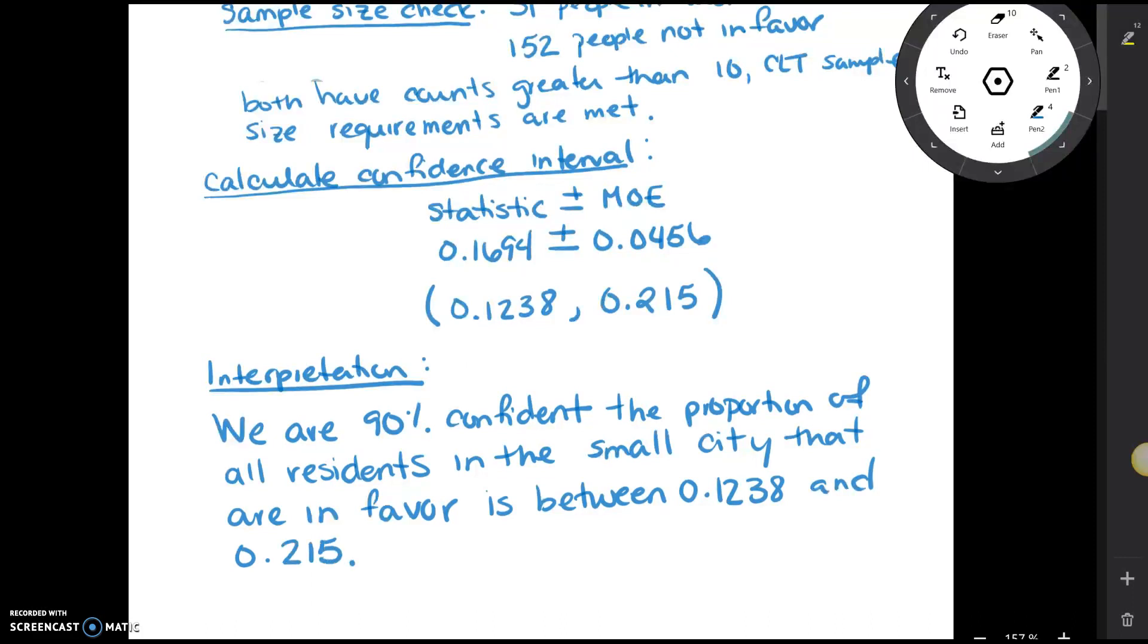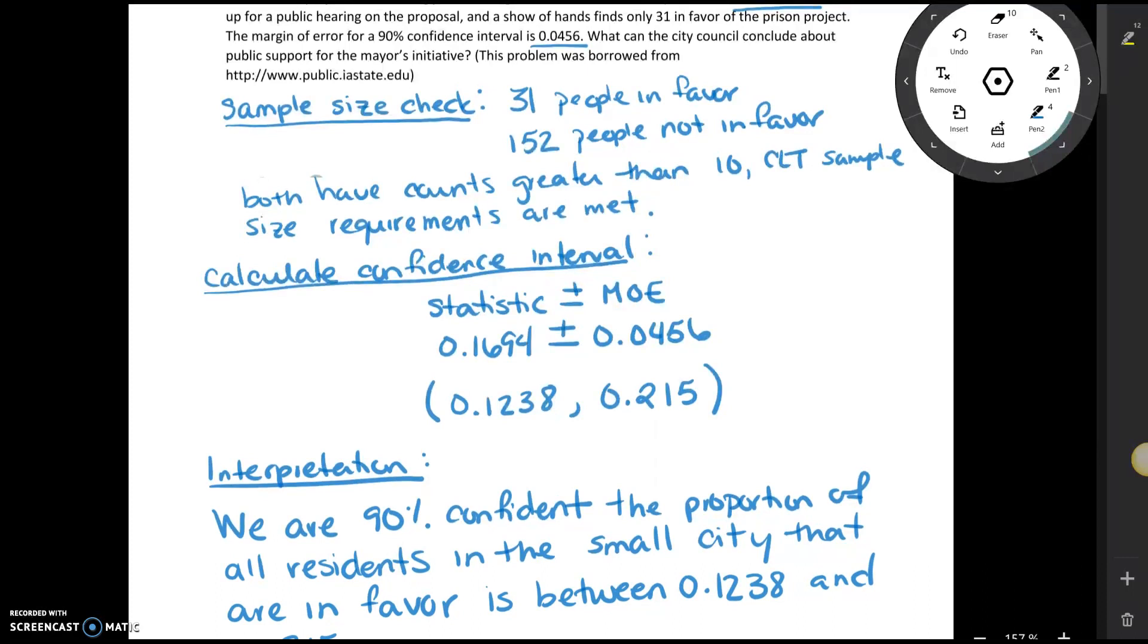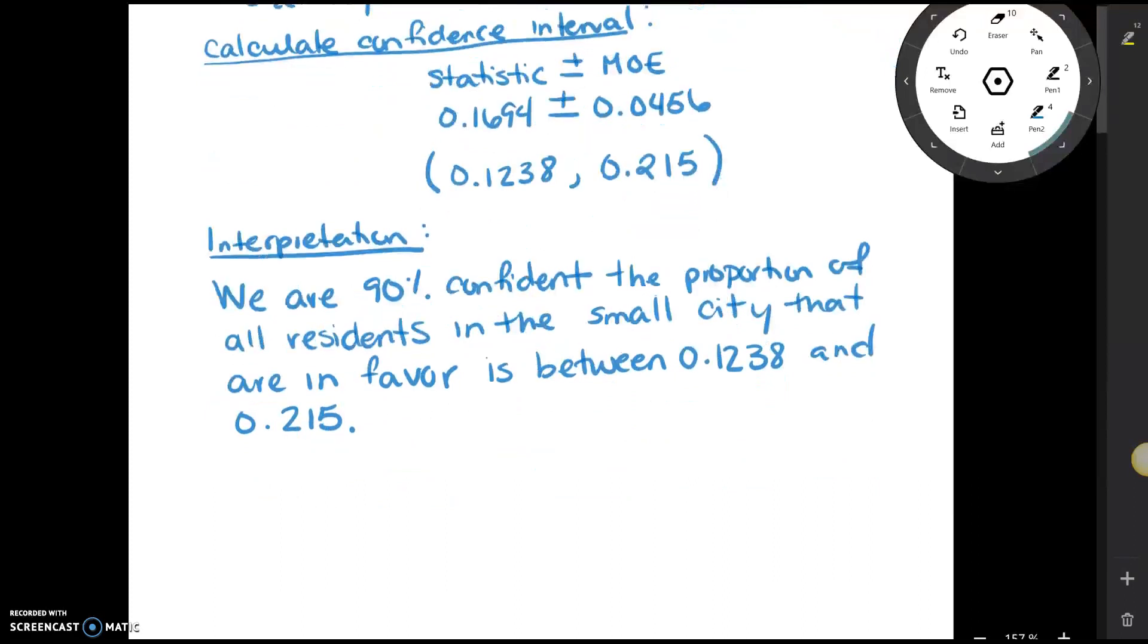Notice if we go back up to the problem statement, it said what can the city council conclude about public support for the mayor's initiative. Well, the confidence interval gives us a range of reasonable values for the parameter. So since the entire interval is below 0.5, we can conclude